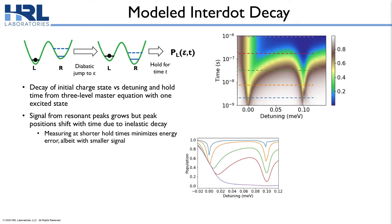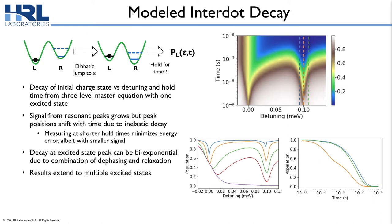This suggests that to measure splittings accurately we should look for peaks at shorter hold times, which has the disadvantage of a smaller signal but provides a more accurate measure of the excited state splitting. Most of the decay observed as a function of detuning is single-exponential, as one might expect. Interestingly, at the excited state anti-crossings, modeling tends to show bi-exponential decays arising from this competition between dephasing and thermalizing effects. These qualitative features extend to the case of multiple excited states, for instance with valley or orbital states that we might want to probe.